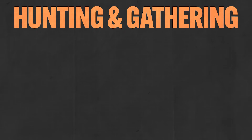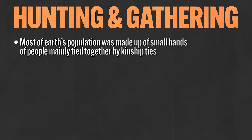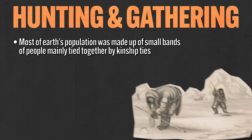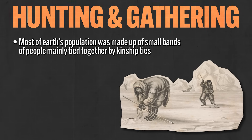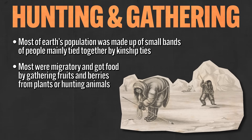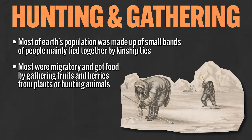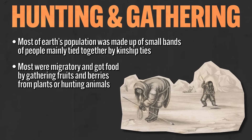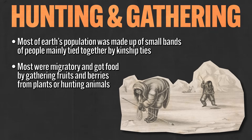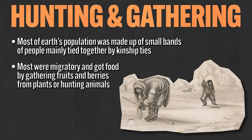When I say hunting and gathering societies, that means that most of Earth's population was made up of small bands of people mainly tied together by kinship ties. Often they were migratory and got most of their food by gathering fruits and berries from plants or by hunting animals for their meat.